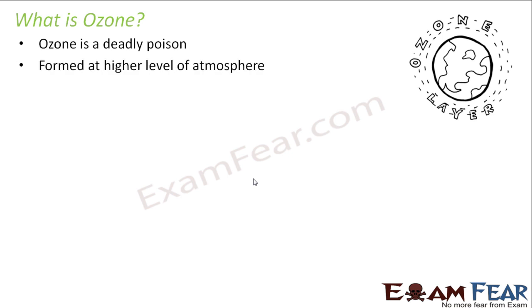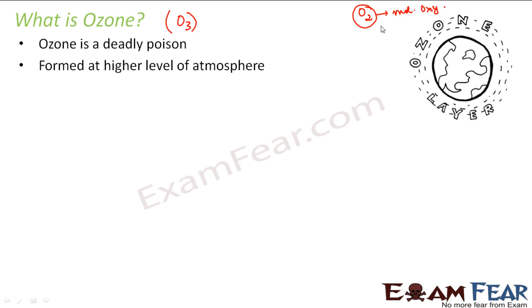Ozone is formed at higher levels of the atmosphere. Ozone is written as O3. O2 is molecular oxygen and O represents one atom of oxygen. So O represents the oxygen atom, O2 represents molecular oxygen, and O3 represents ozone. The question is: how is ozone formed, and how does ozone help in preventing ultraviolet radiation from reaching the earth?